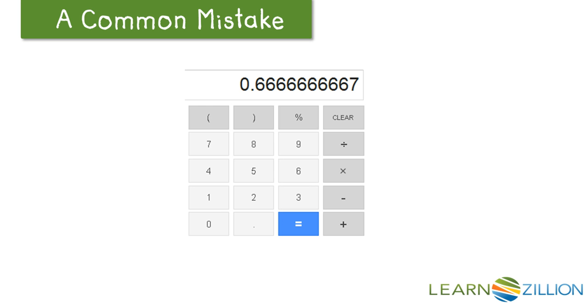A common mistake. On a calculator, what happens is when we divide fractions into decimals, the calculator eventually will stop, and at the end of the number, it rounds it. And so in this case, we get 0.66666, and we have a 7 on the end of the number.